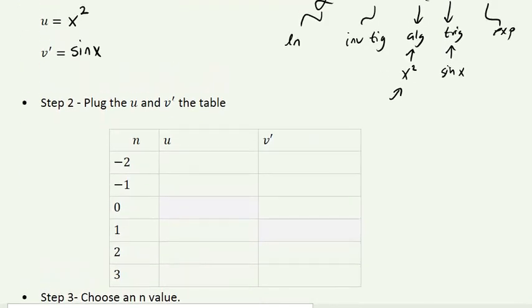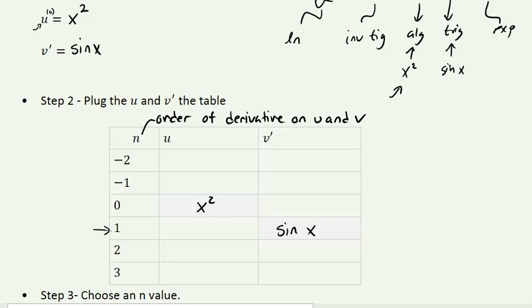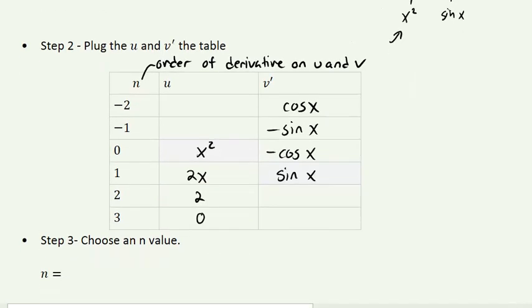Next, we plug u and v into our nth-order derivative table, where n is the order. Because u is not a derivative, it has order zero, so we plug x squared into the order-zero slot for u. Since v prime is a derivative, it has order one, so we plug sine x into v's first-order slot. Now we fill out the derivatives for u: first derivative is 2x, then 2, then zero (derivative of a constant). For the integrals of sine x: negative cosine x, negative sine x, then cosine x again.